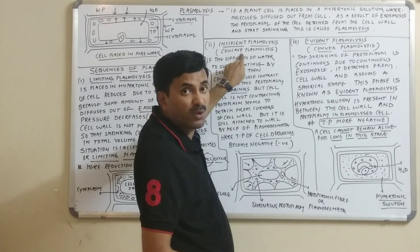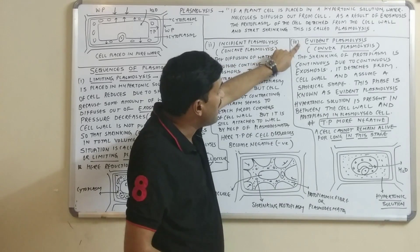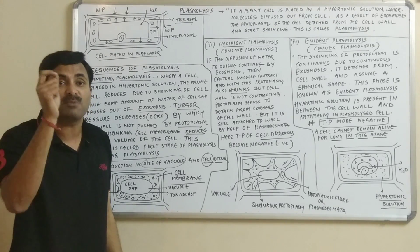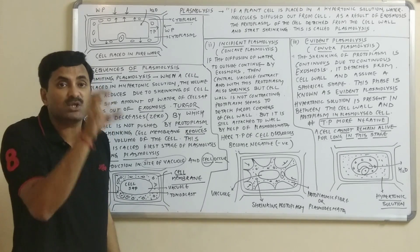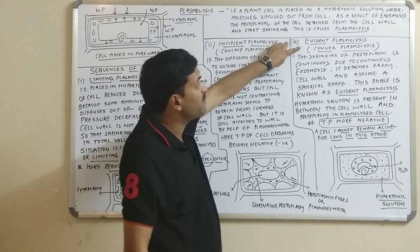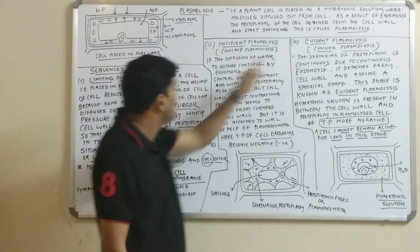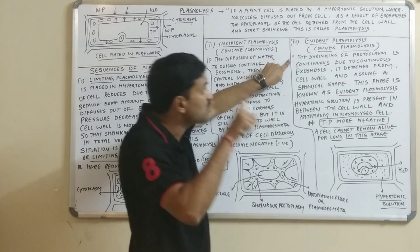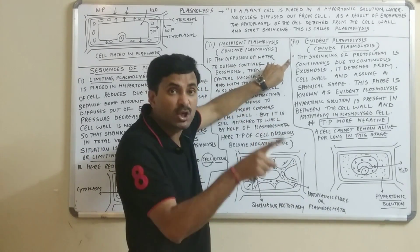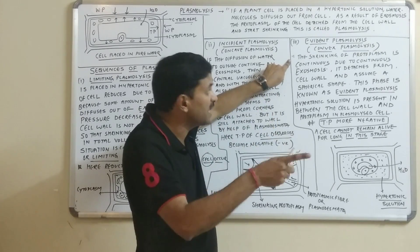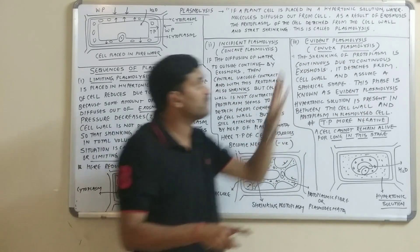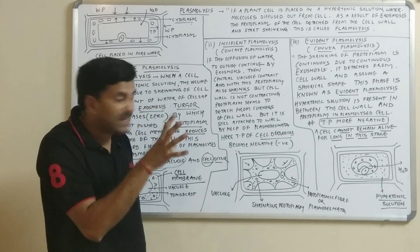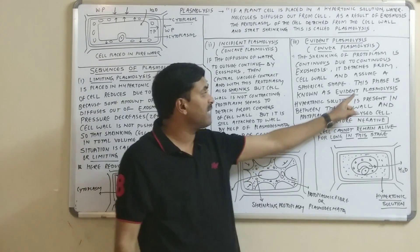Incipient plasmolysis is also called concave plasmolysis. Evident plasmolysis is the final or clear-cut plasmolysis. Here you will see the complete shrinkage of the protoplasm, and it is also called convex plasmolysis. The shrinkage of the protoplasm is continuous due to continuous diffusion of water from inside to outside — that is exosmosis. The protoplasm detaches from the cell wall and assumes a spherical shape, present at the center. This is known as evident plasmolysis.